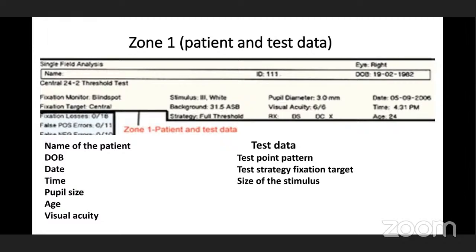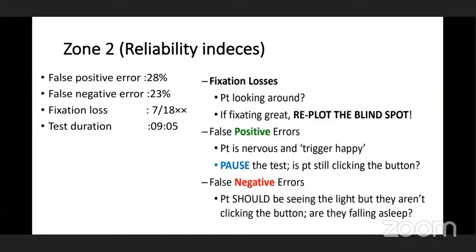In reliability indices, we have fixation loss, false positive error, false negative error, and test duration. For fixation loss: the patient should fixate at the center, so when light falls on the blind spot, the patient should not respond. If the patient responds, it indicates eye movement. The normal value is less than 20%. A value of seven out of eighteen, marked with two crosses, indicates high fixation loss.